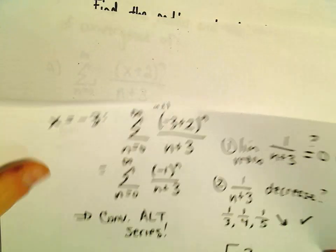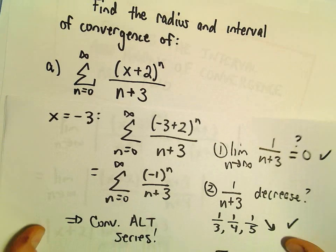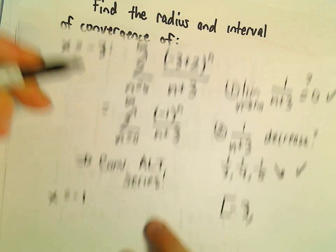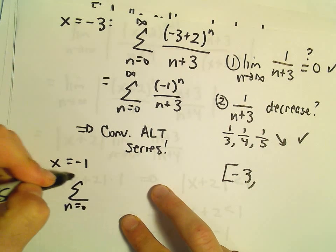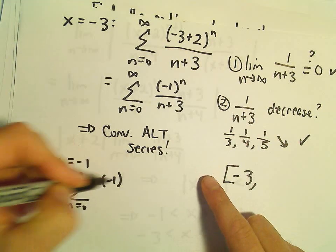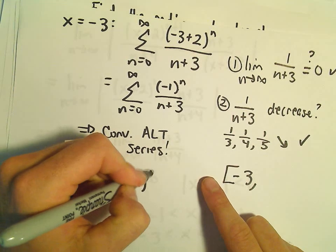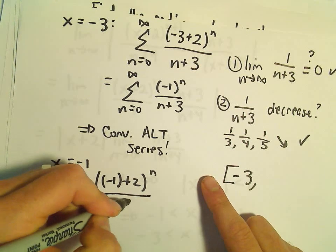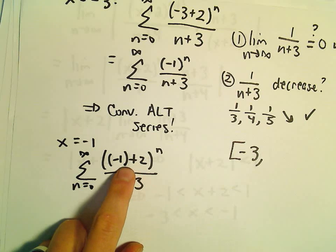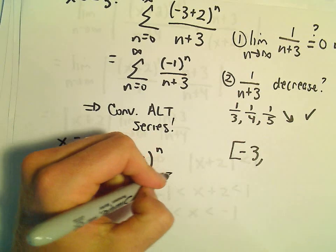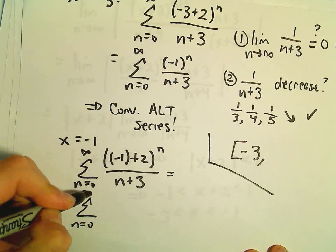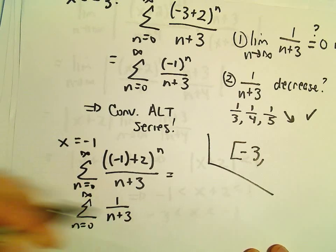The other endpoint we have to check is negative 1. Plugging in x equals negative 1, we have the series from n equals 0 to infinity of negative 1 plus 2 to the n over n plus 3. But negative 1 plus 2 is positive 1, and positive 1 to any power is 1. So this leaves us with the series from 0 to infinity of 1 over n plus 3.